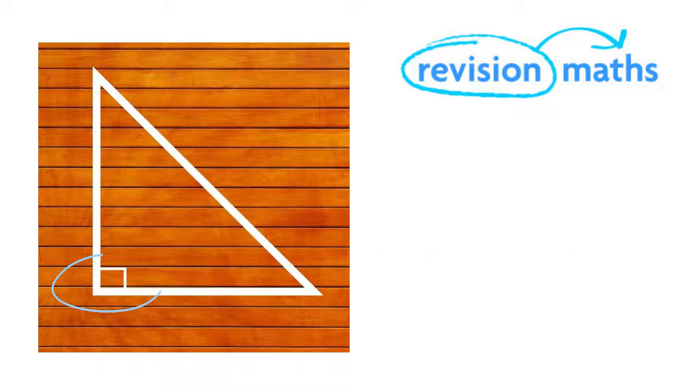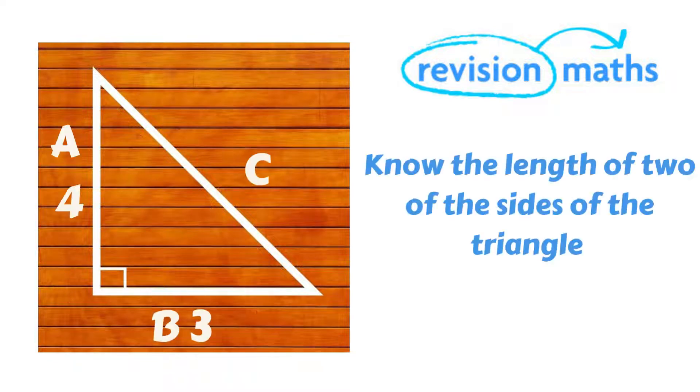If a triangle does not have a 90 degree angle you will have to use another method to calculate the missing side's length. You also have to know the length of two of the sides of the triangle in order to use Pythagoras Theorem.